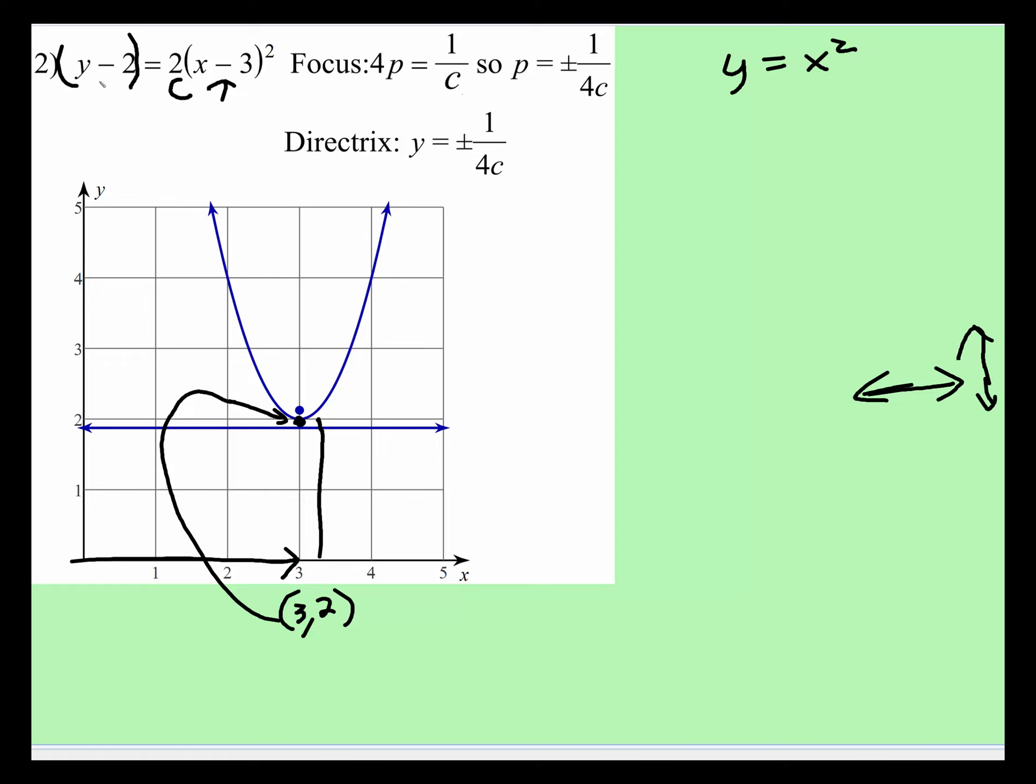Notice, here is our c value right there, and we still have that invisible 4p. So now, I'm going to put 4p is equal to 1 over the c value, and the c value this time is 2. I'm going to multiply both sides by 1/4.